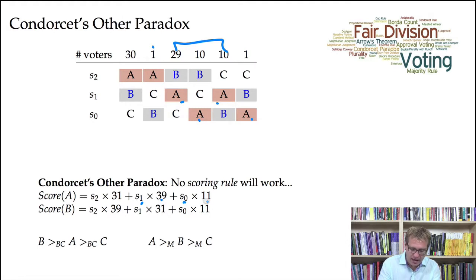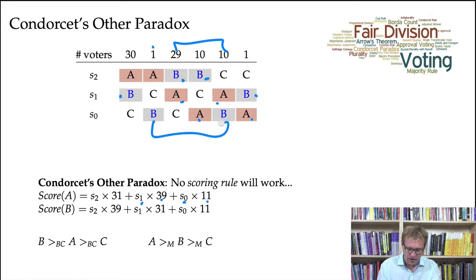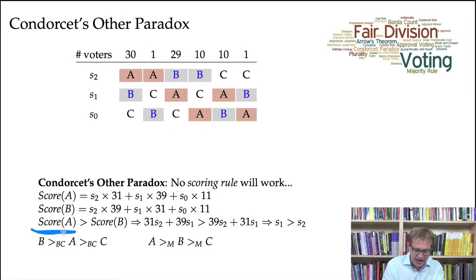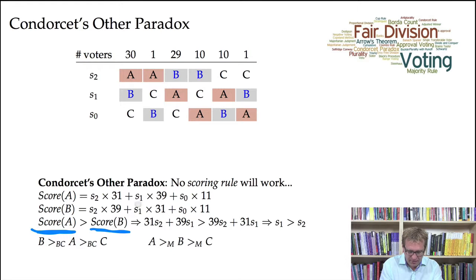What about candidate B? We see 39 voters give candidate B a score of S2, 31 voters give candidate B a score of S1, and 11 voters give candidate B a score of S0. Now, if we want candidate A to be ranked above candidate B, the score given to candidate A must be greater than the score given to candidate B. That means S2×31 + S1×39 + S0×11 must be strictly greater than S2×39 + S1×31 + S0×11.